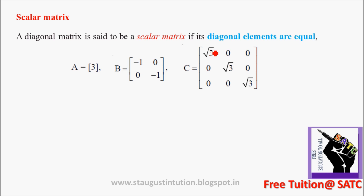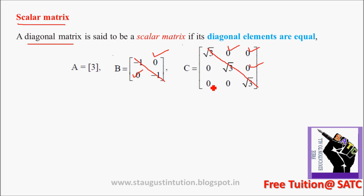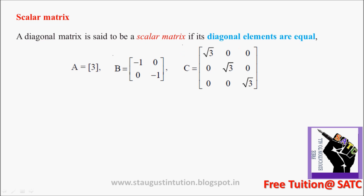Scalar Matrix: If the diagonal elements are all equal, then it is known as a scalar matrix. For example, this diagonal is root 3 and this diagonal is also root 3 — since all diagonal elements are equal, it is a scalar matrix.